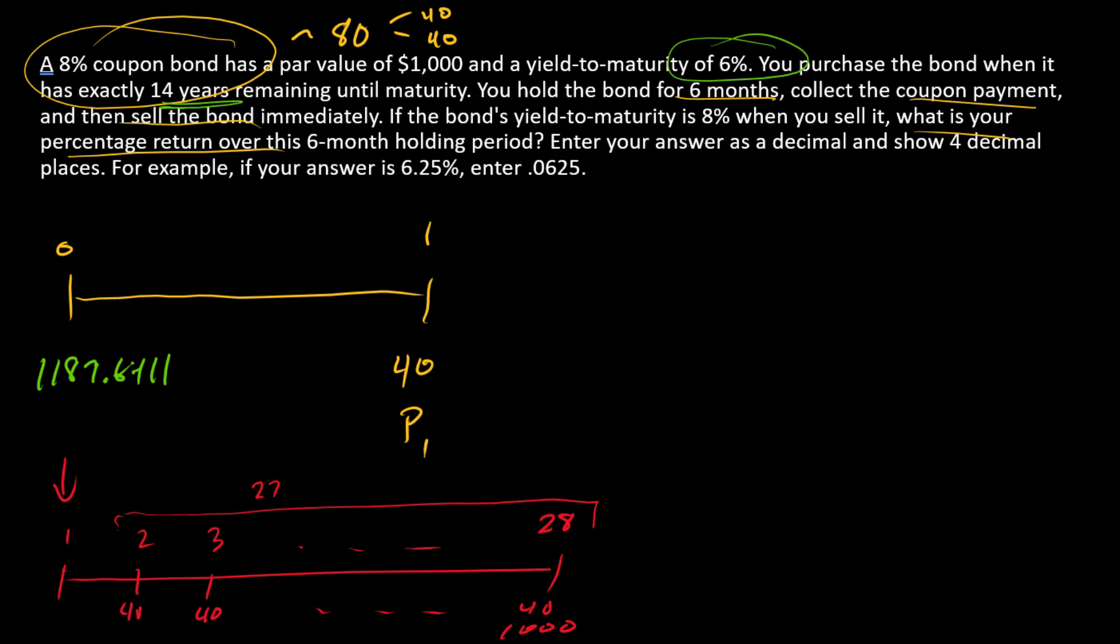We want the price at time one, and so in order to do that we can go into our financial calculator again. Make N=27, payment and FV are the same as they were before. We note that the yield to maturity is different when this investor sells the bond than when this investor buys the bond, so we're going to change that I. Yield to maturity is now 8%.